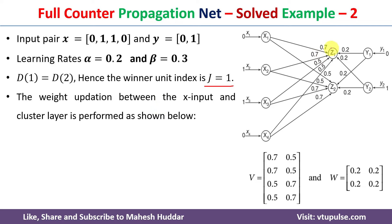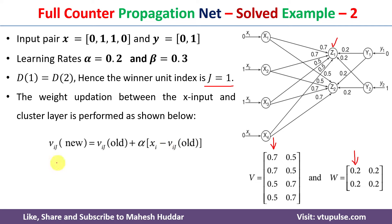Once we identify the winning cluster unit, we update the weights with respect to z1. We update this column for X-to-z1 weights using the equation: v_ij(new) = v_ij(old) + alpha * (x_i minus v_ij(old)). We put j=1 and let i go from 1 to 4. For the first iteration with i=1 and j=1, the equation takes the form shown here.